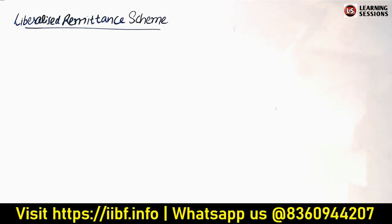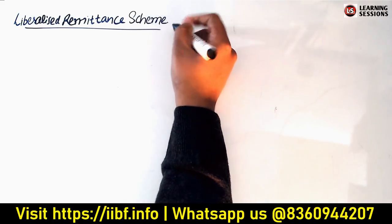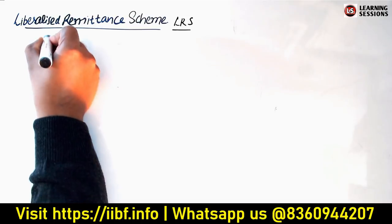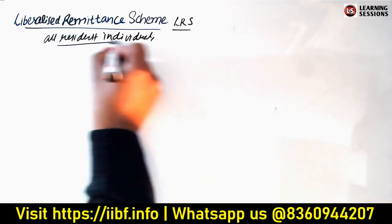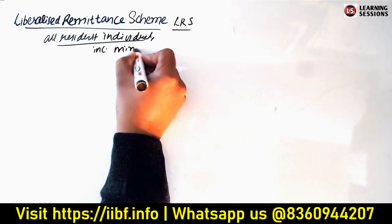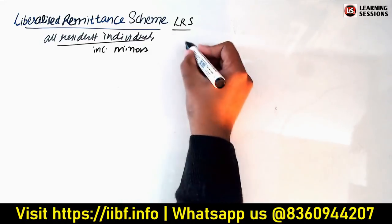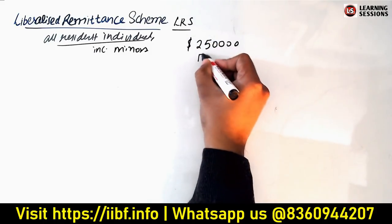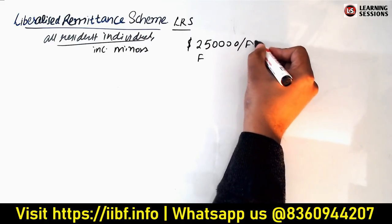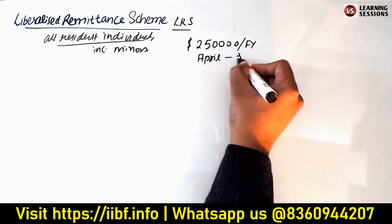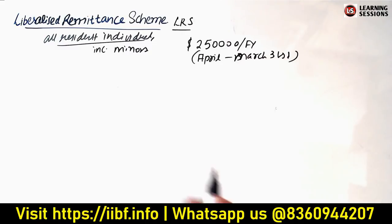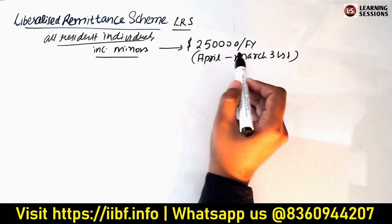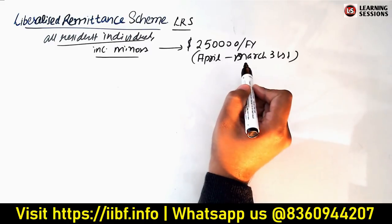Now let us start with the Liberalized Remittance Scheme (LRS). Under LRS, all resident individuals, including minors, are allowed to freely remit up to USD 250,000 per financial year. The financial year runs from April to March 31st. This remittance can be done for either current account or capital account transactions. LRS was introduced on February 4, 2004, with an initial limit of USD 25,000, which has been gradually increased over stages.